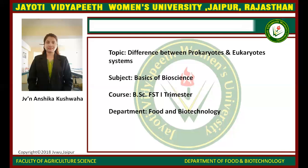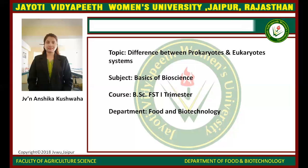Eukaryotes appeared about 1 billion years ago. In prokaryotes, they have circular DNA, are only unicellular, have cells of smaller size, have a larger number of organisms, and appeared approximately 4 billion years ago.